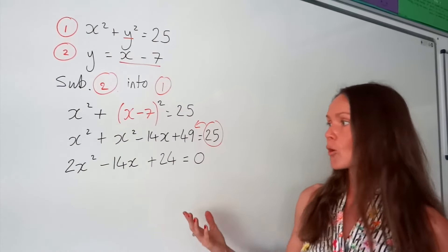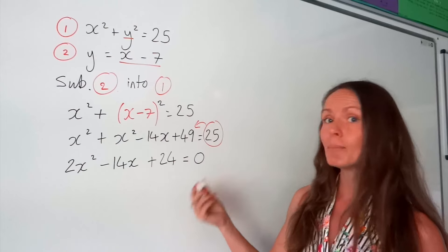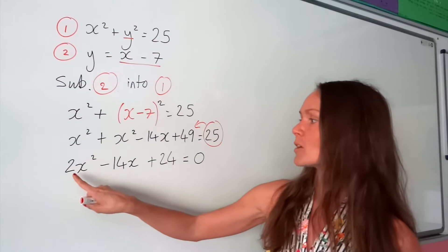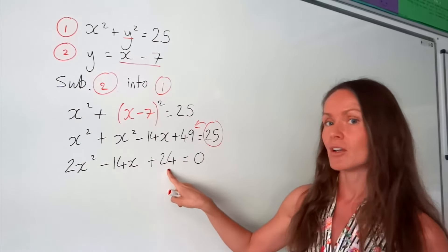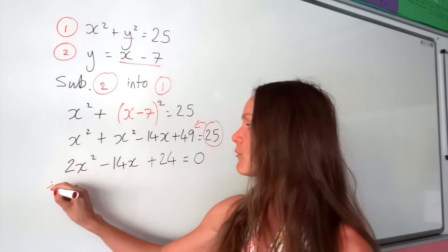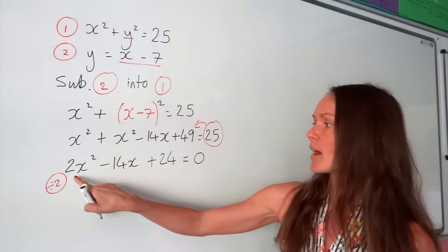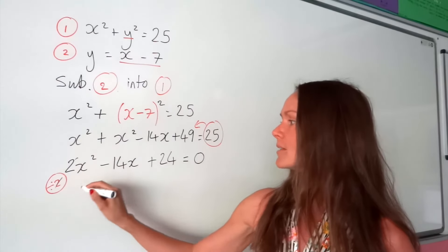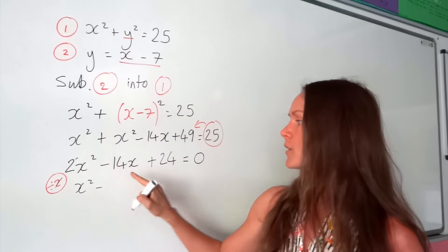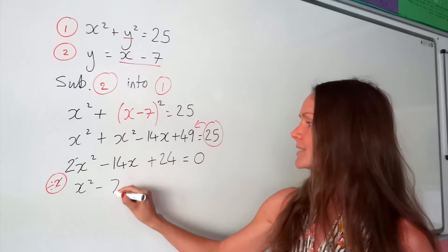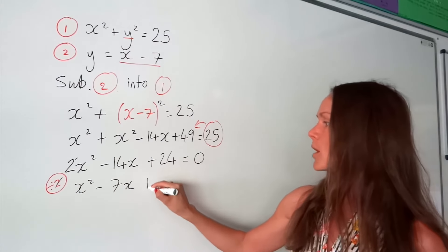So instead of just solving this straight away, I can simplify this a little bit more. Because all of these numbers here are even, I'm going to divide everything in this equation by 2. So if I divide this by 2, I'm left with x squared. If I divide this by 2, I get negative 7x. And here I get 12.